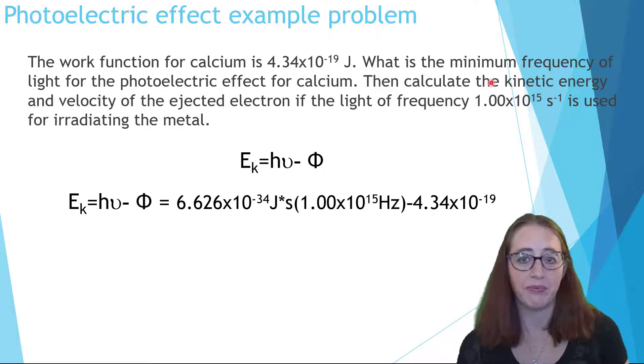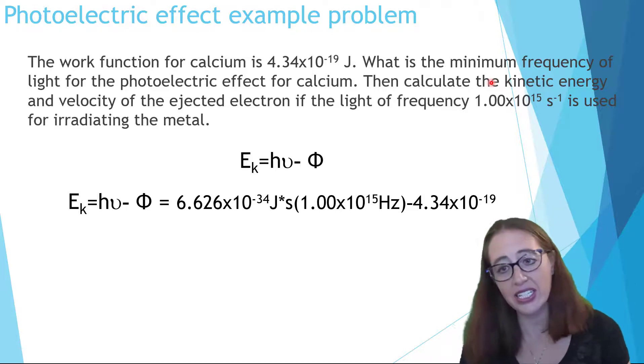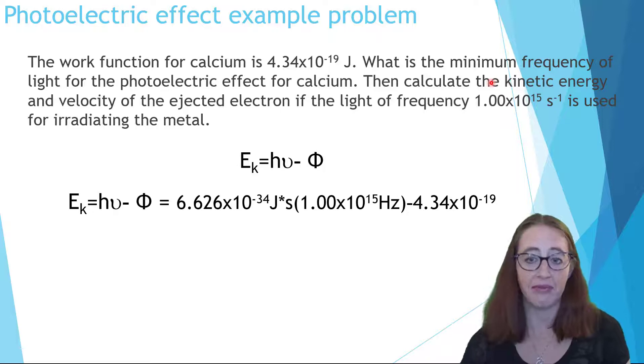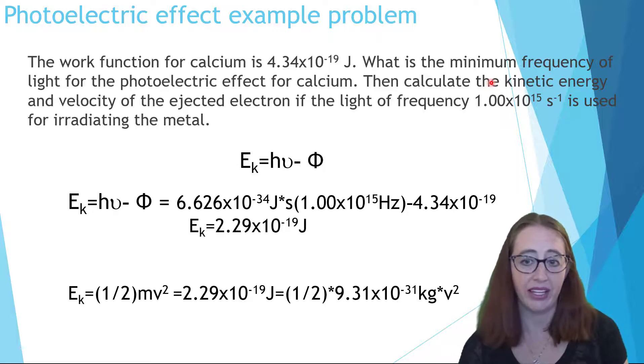Now moving on to the second part. We want to know the kinetic energy of the ejected electron. So we'll solve for E_k by filling in the frequency and the work function. Once we know the kinetic energy, we can fill into 1/2 m v squared to solve for v. We simply fill in our values for mass and for kinetic energy and solve for v to get our answer.